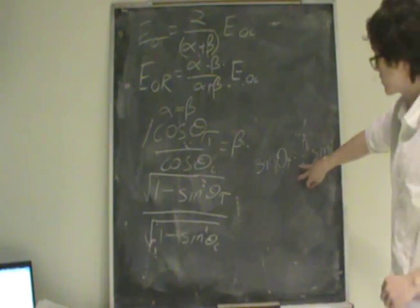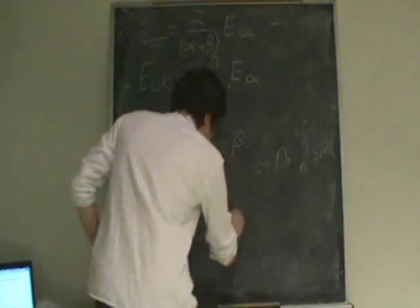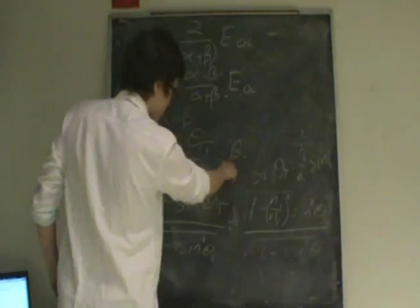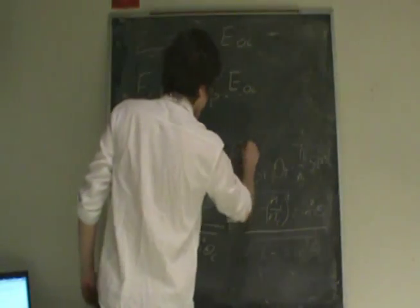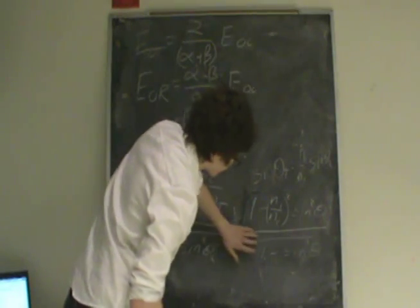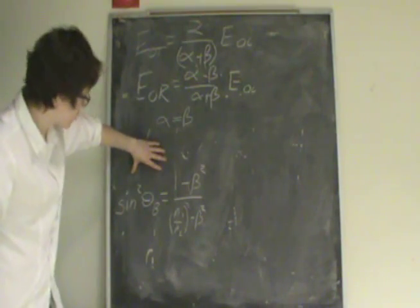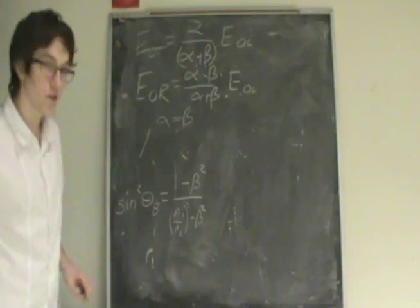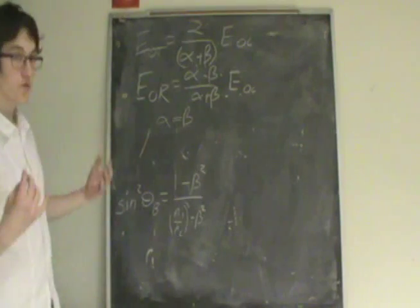By plugging Snell's law back into the equation, we get an expression equal to beta. If we square beta, the square roots cancel. After some rearrangement, we arrive at the final expression for Brewster's angle — the angle at which the incoming light produces no reflection.